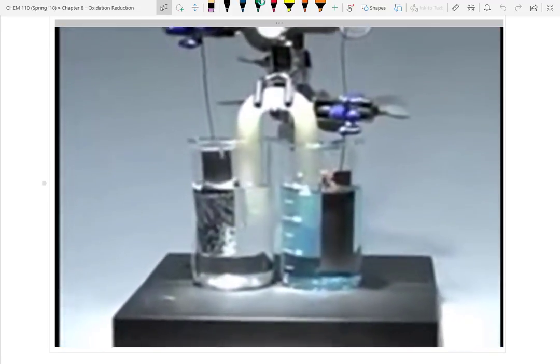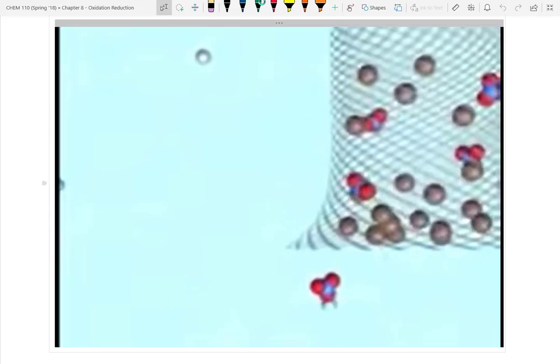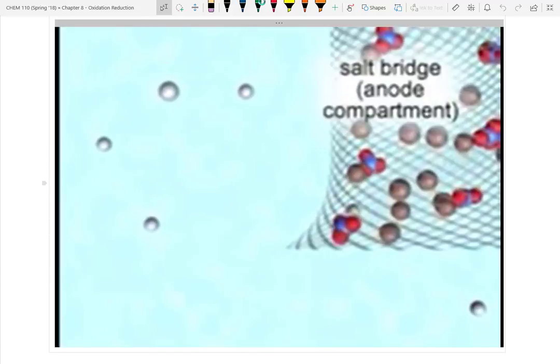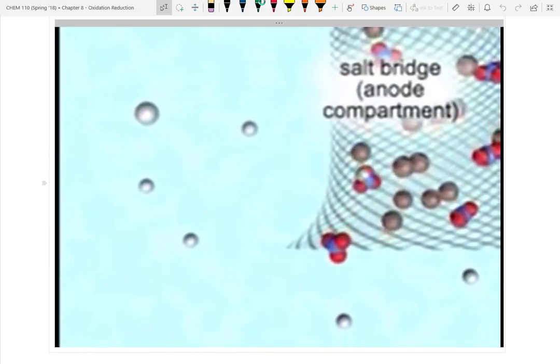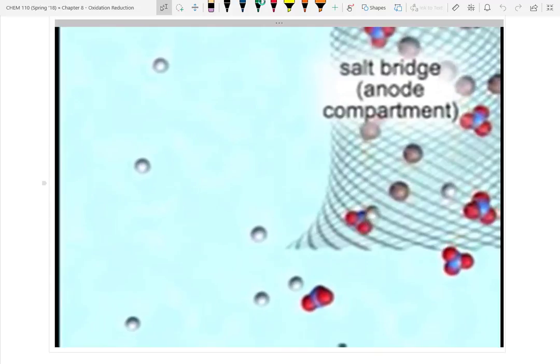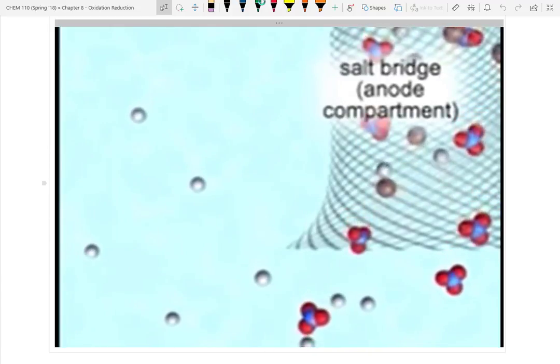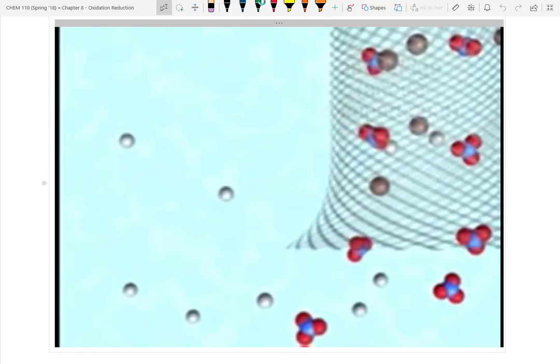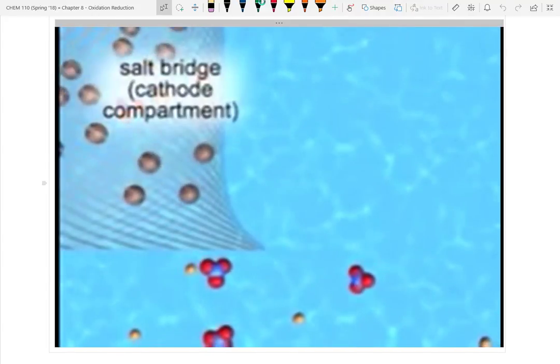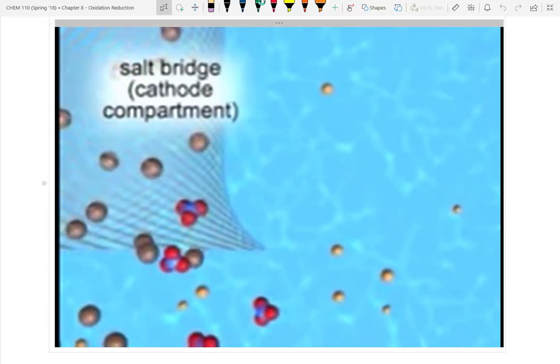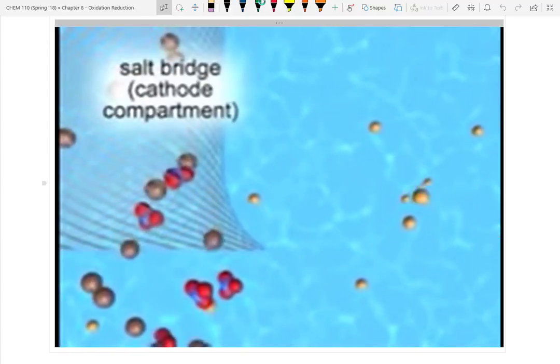When a copper 2 ion in the cathode solution makes contact with the copper electrode, it gains two electrons and is reduced to a copper atom, which deposits on the bar. Therefore, as the cell runs, the zinc anode becomes lighter and the copper cathode heavier. Now let's close in to see the role of the salt bridge. The non-reactive sodium and nitrate ions of the salt bridge prevent the buildup of charge that would occur as zinc ions enter the anode solution and copper 2 ions leave the cathode solution. Such a charge buildup would halt cell operation. In the anode compartment, nitrate ions leave the salt bridge to balance the gain of positive charge as zinc ions enter the solution.